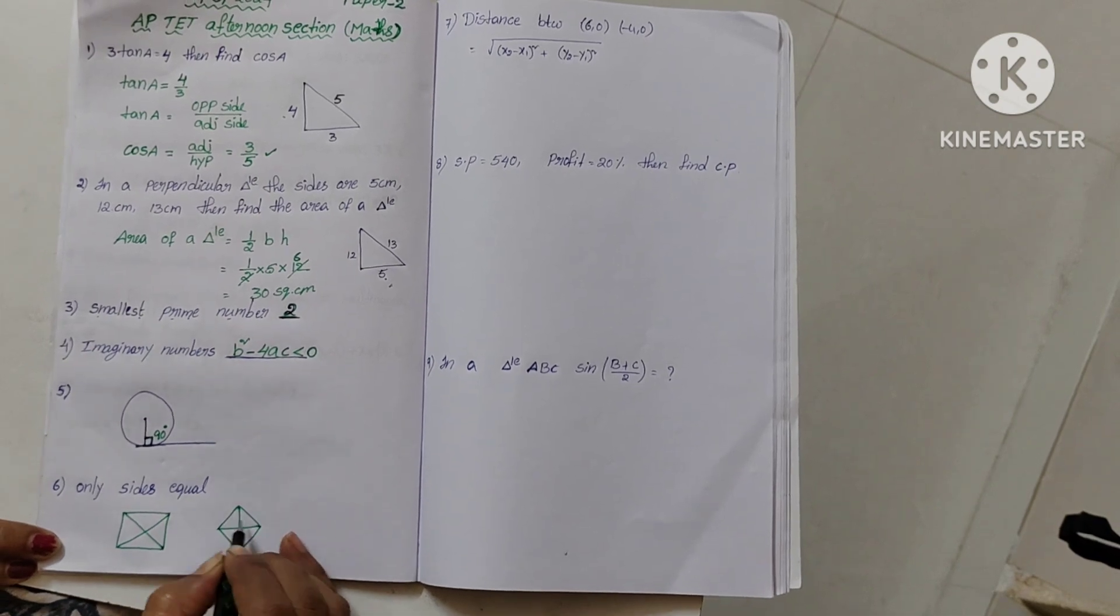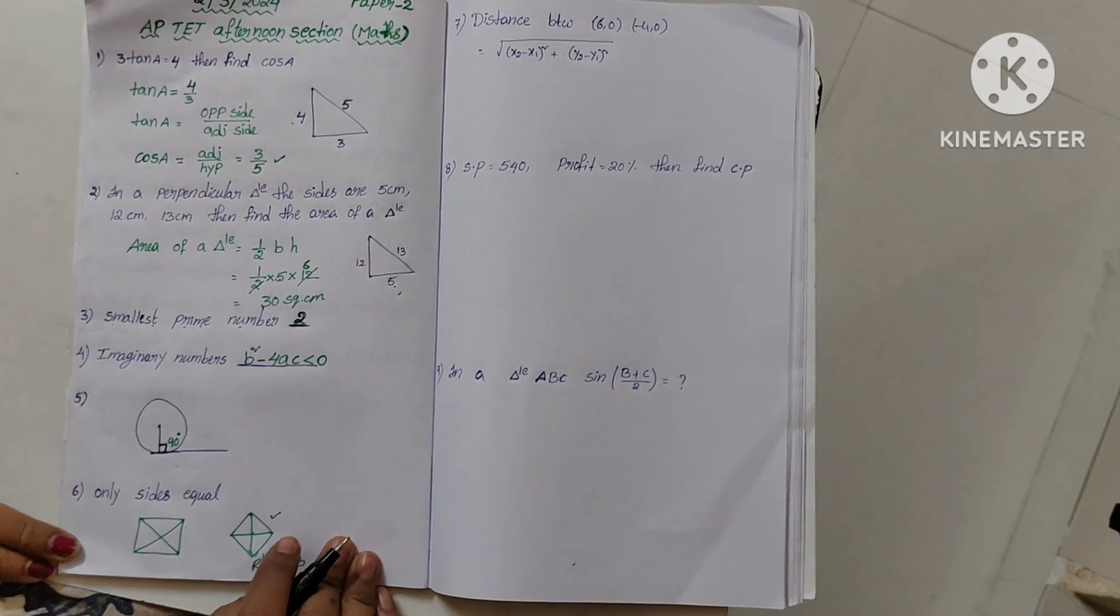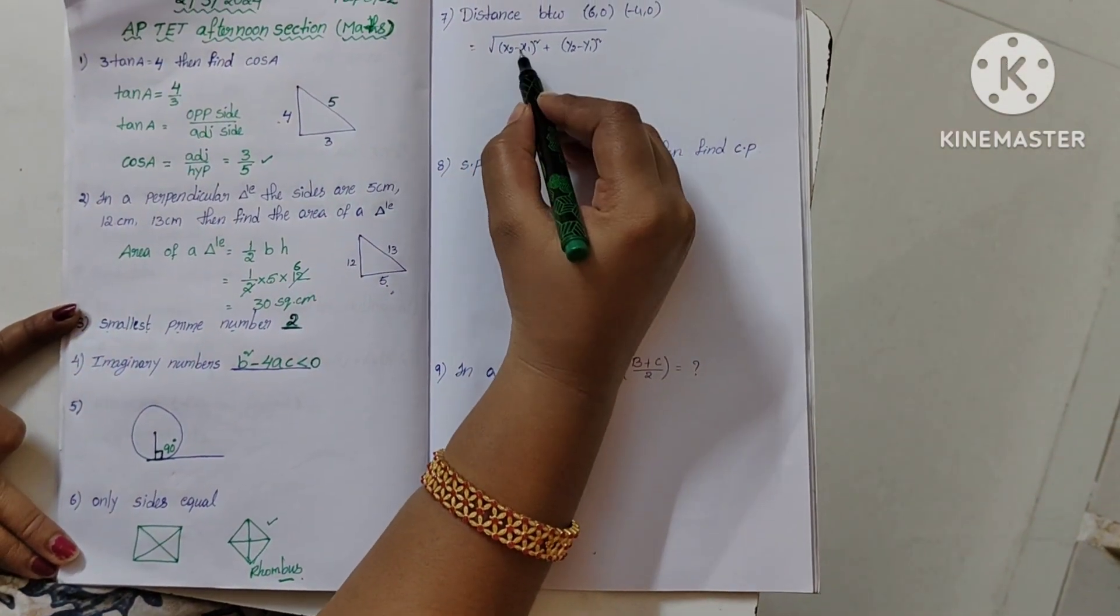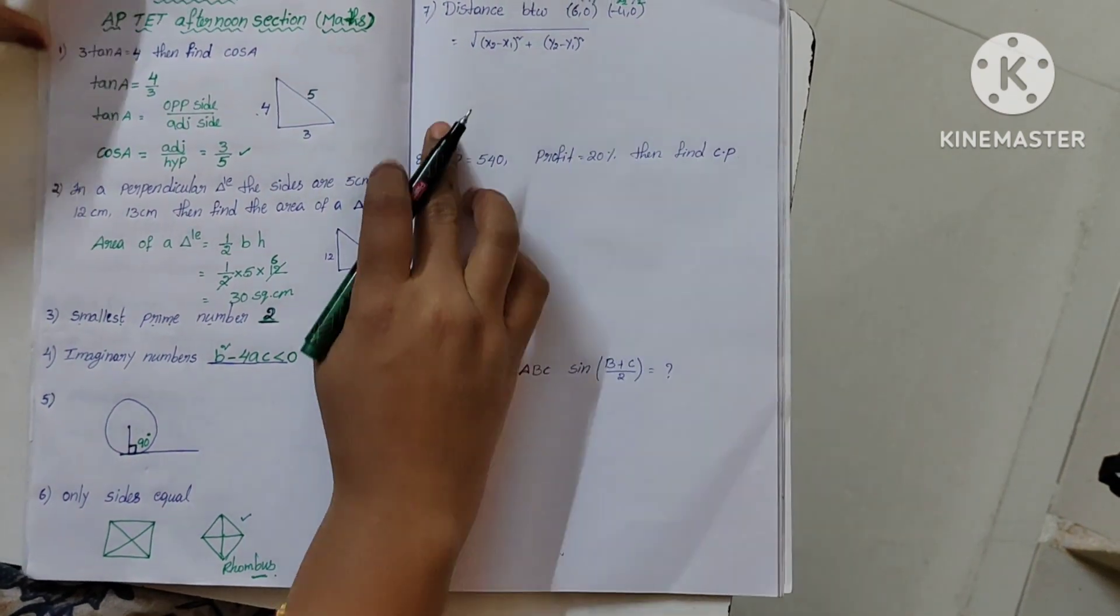In a rhombus, diagonals are equal. Please comment your answer. Next: distance between two points 6,0 and minus 4,0.